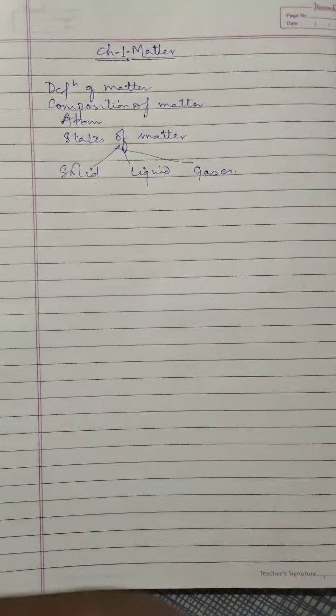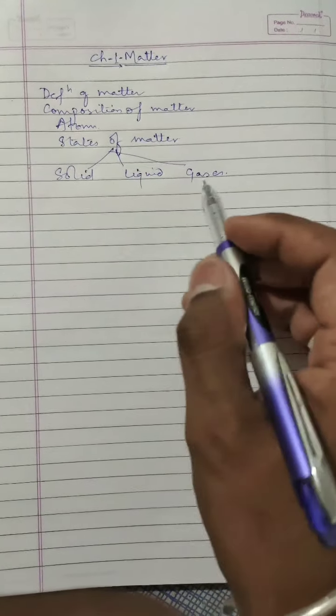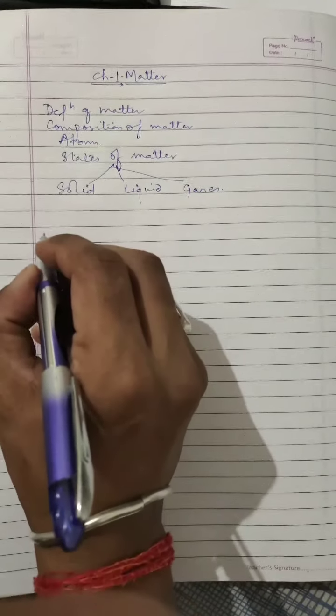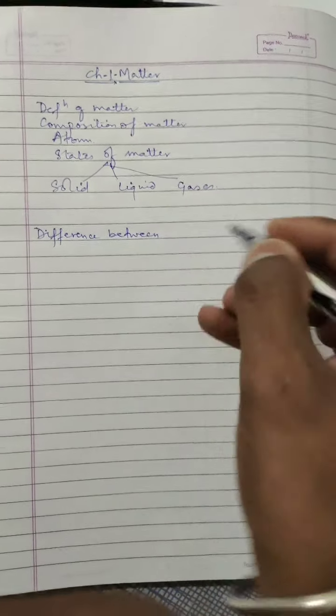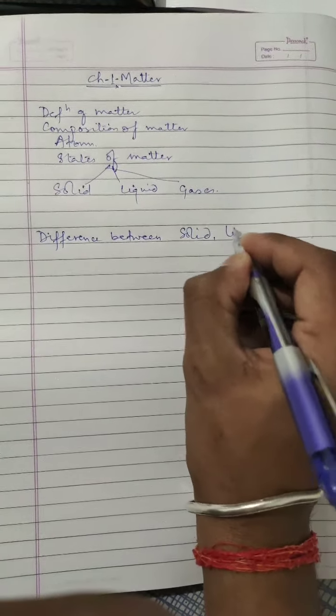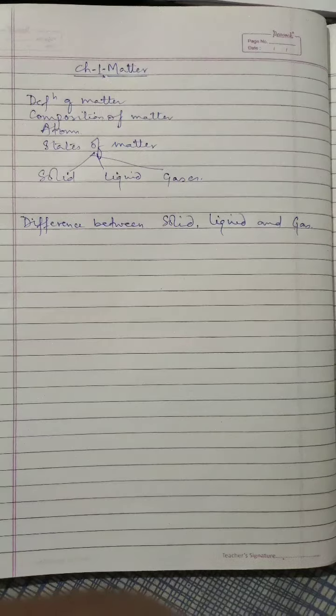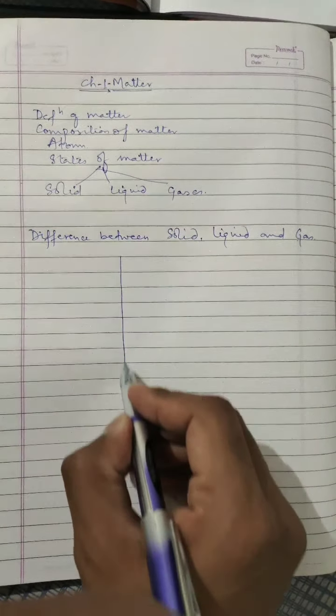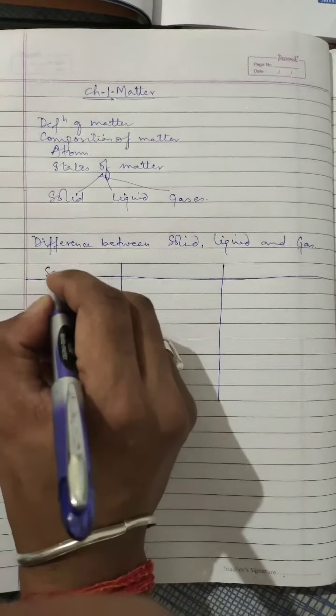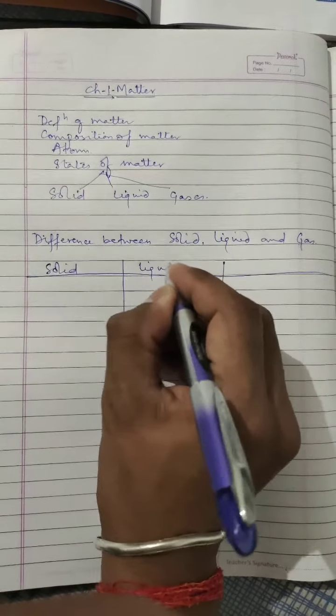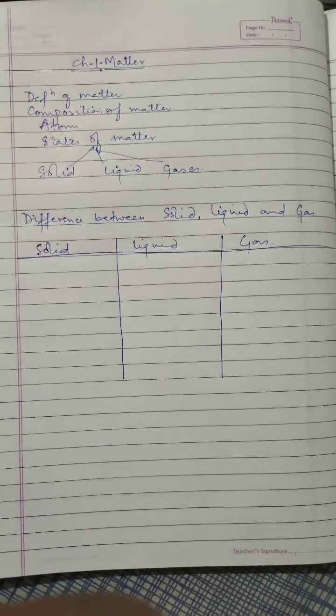Now a very small and the last topic is left, that is difference between these three states of matter. Next we will study difference between solid, liquid, and gas. Let us make three columns in which we will differentiate solid, liquid, and gas.